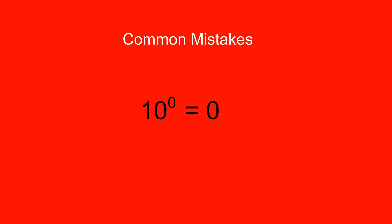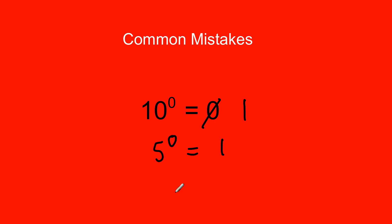Our common mistakes today are thinking that 10 to the zero power is zero — it is not zero. Anything to the zero power equals 1. For example, 5 to the zero power equals 1. Thirteen to the zero power equals 1. Anything to the zero power equals 1.